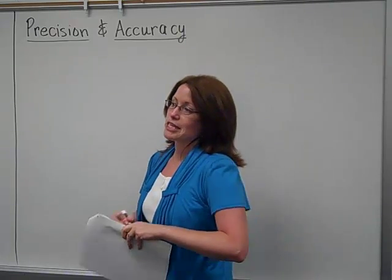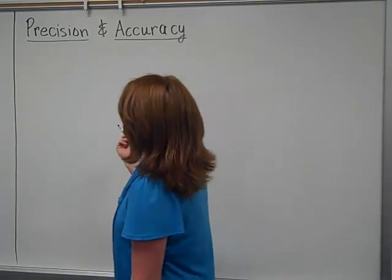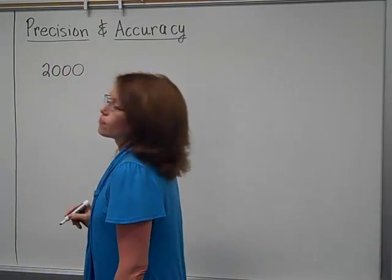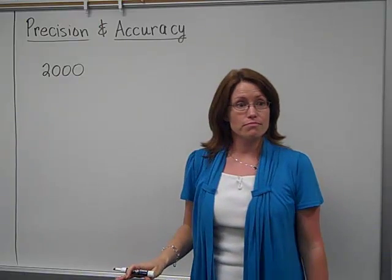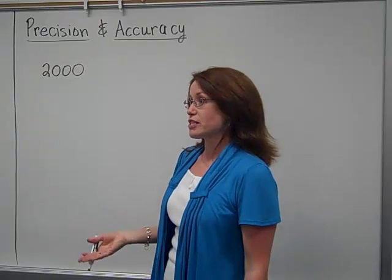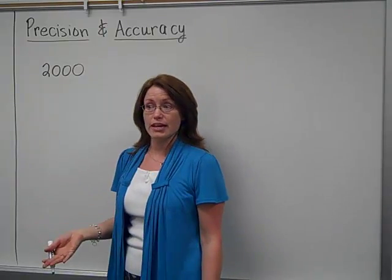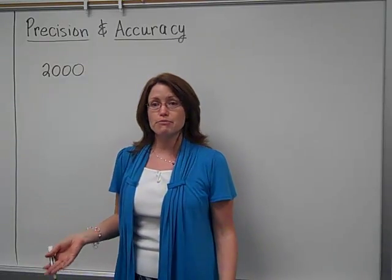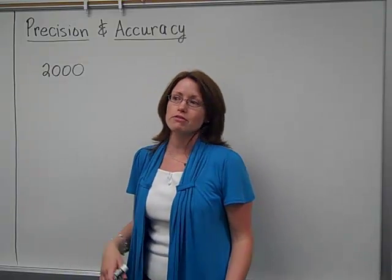I'm going to start off by just giving you some numbers. For example, the number 2000 - notice that it doesn't have any decimal places. So it has zero decimal places. As far as the precision, it's not very precise, it's just 2000. Sometimes you want to be precise, sometimes you don't need to be precise.